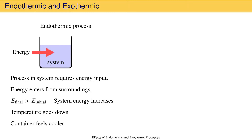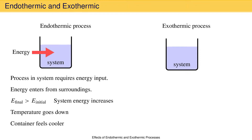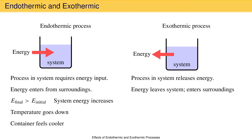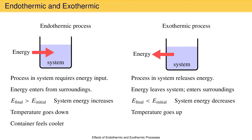We'll have to come back to that, but for now let's look at an exothermic process. Let's imagine we have a system, such as the blue fluid in this beaker, in which something happens. If that something is an exothermic process, then the process in the system releases energy. We know that energy enters the surroundings because of the first law. The energy released by the system makes the final state energy of the system less than the energy of the initial state, meaning that the system energy decreases during the process. Experimentally, you will find that as the exothermic process takes place, the temperature of the system goes up and then the temperature of the container follows suit, causing it to feel warmer to your touch.